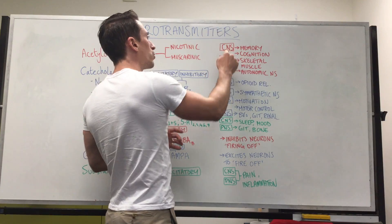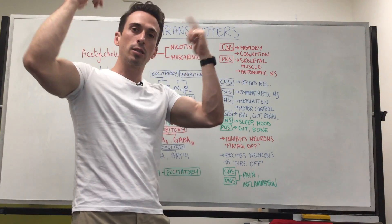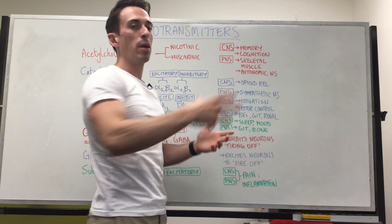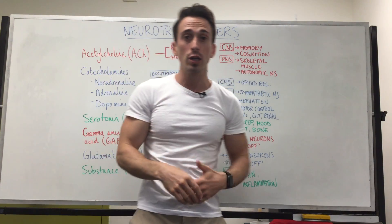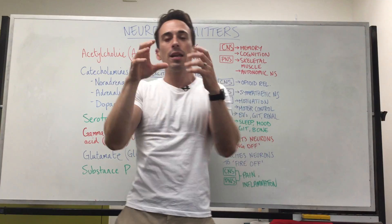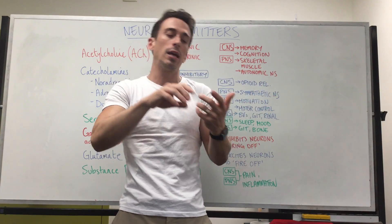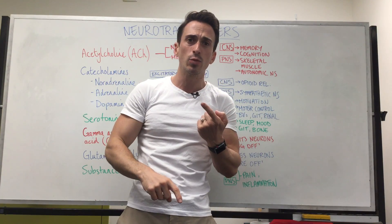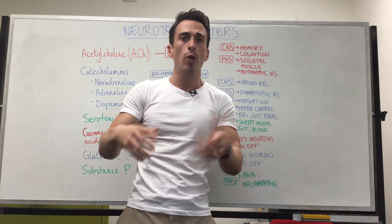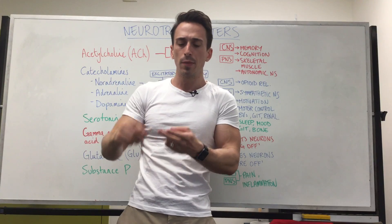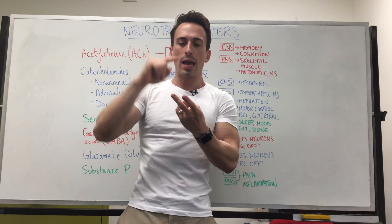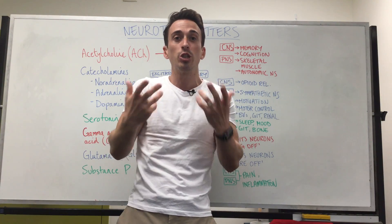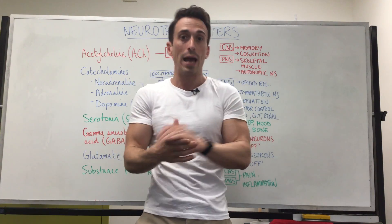In the central nervous system — brain and spinal cord — acetylcholine plays an important role in memory and cognition, and has been implicated in Parkinson's disease, which is the most common movement disorder, and Alzheimer's disease, which is the most common neurodegenerative disorder.